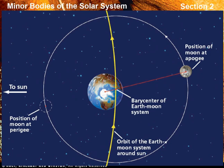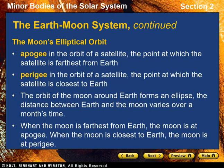The barycenter follows a smooth orbit around the sun, as is shown on the screen here. The moon's elliptical orbit. The orbit of the moon around Earth forms an ellipse that is about five percent more elongated than a circle. Therefore, the distance between Earth and its moon varies over a month's time. When the moon is farthest from the sun, the moon is at apogee. When the moon is closest to Earth, the moon is at perigee.